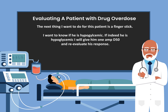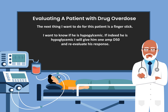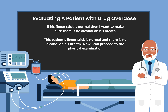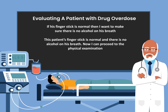The next thing I want to do for this patient is a finger stick. I want to know if he is hypoglycemic. If indeed he is hypoglycemic, I will give him 1 amp D50 and re-evaluate his response. If his finger stick is normal, then I want to make sure there is no alcohol on his breath. This patient's finger stick is normal and there is no alcohol on his breath.